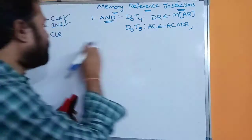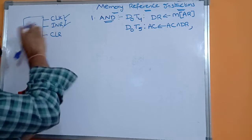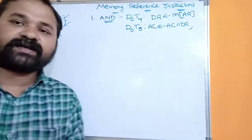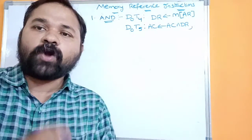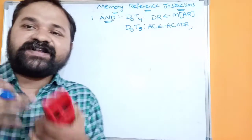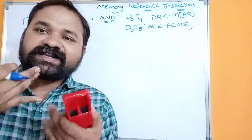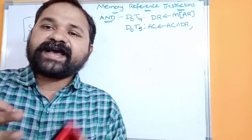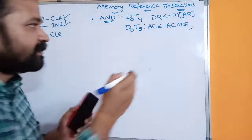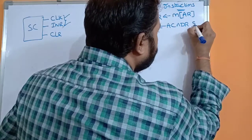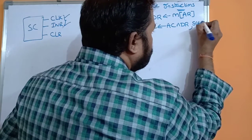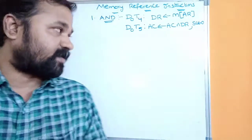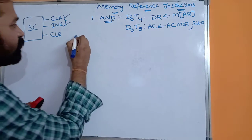Next we have to enable the clear input of the sequence counter. Whenever we enable the clear input of the sequence counter, in the next transition — when we apply the clock pulse — it will start from timing signal T0 again. So SC is cleared to zero, meaning the next timing signal becomes T0. That completes the AND instruction.